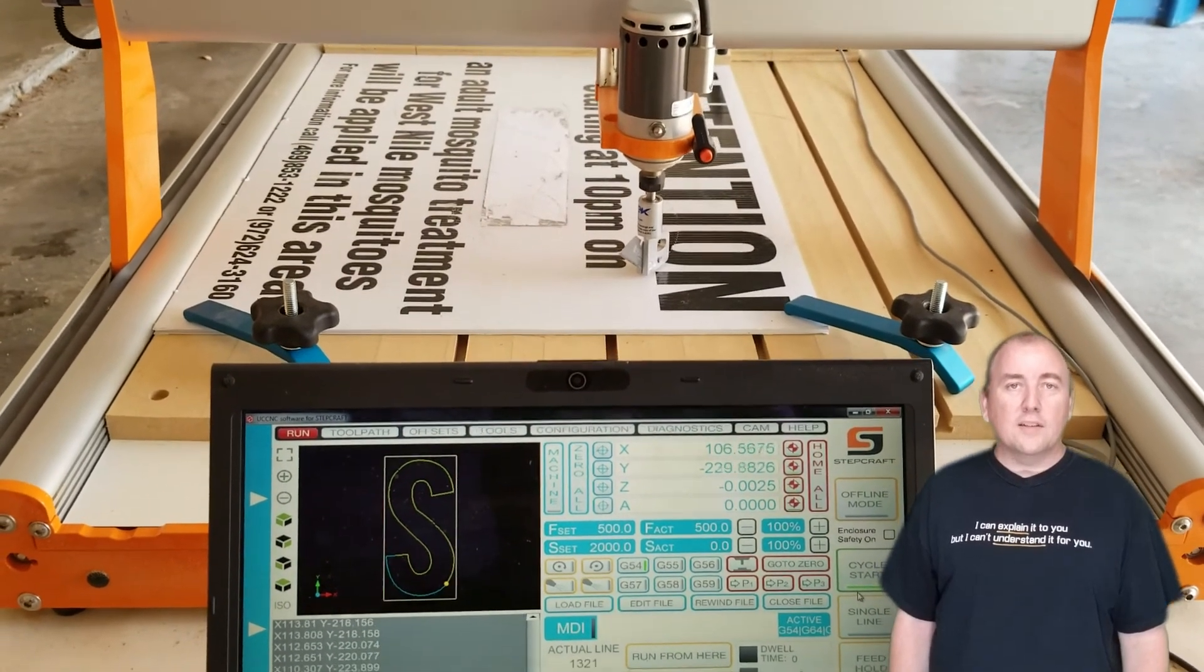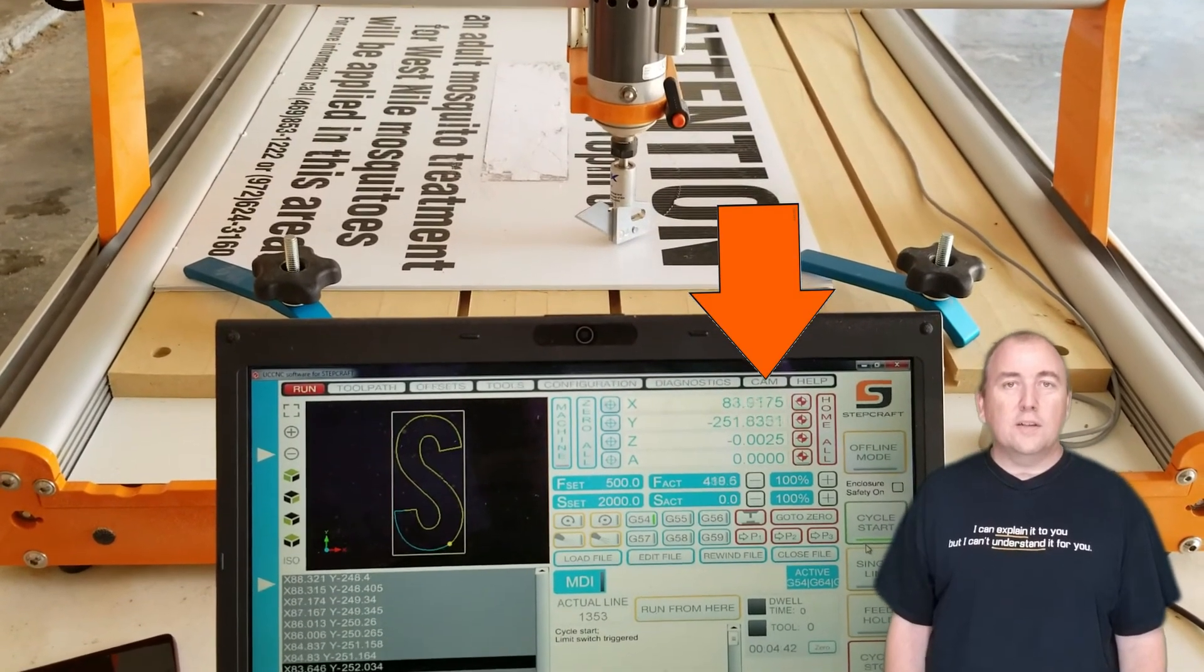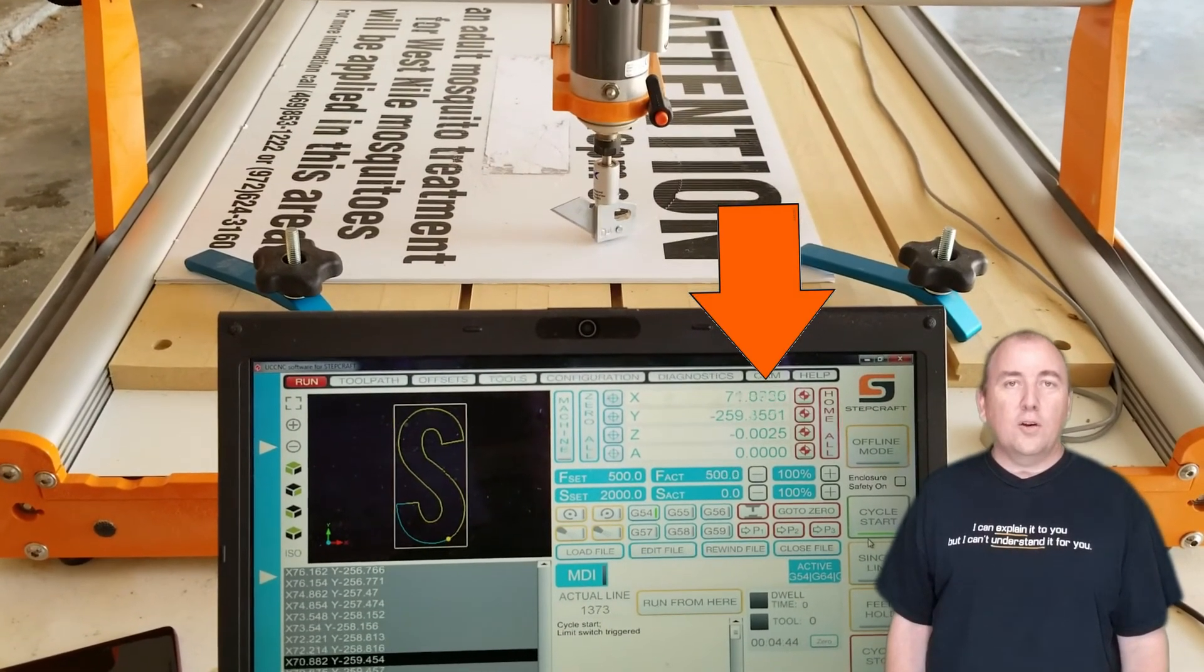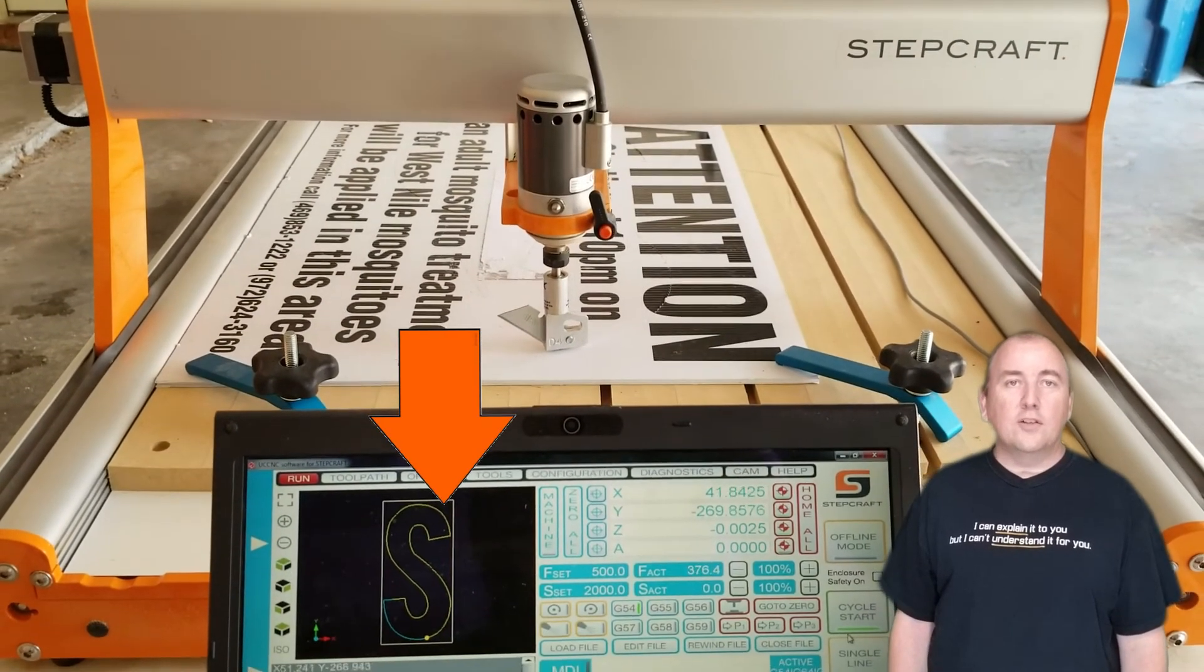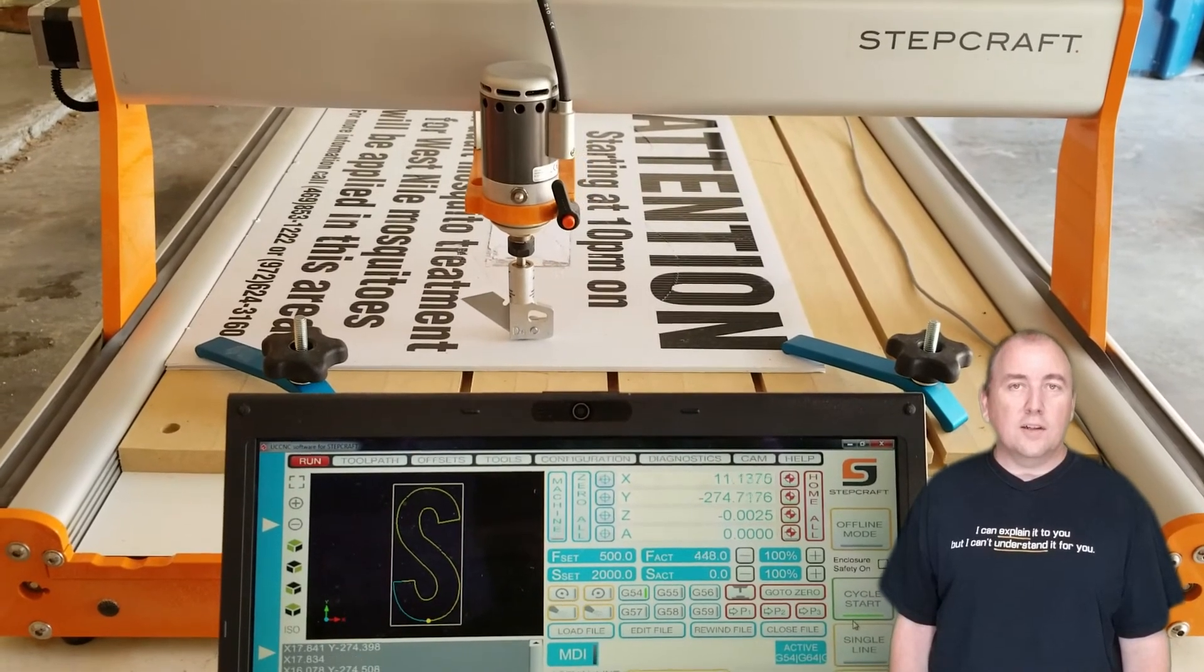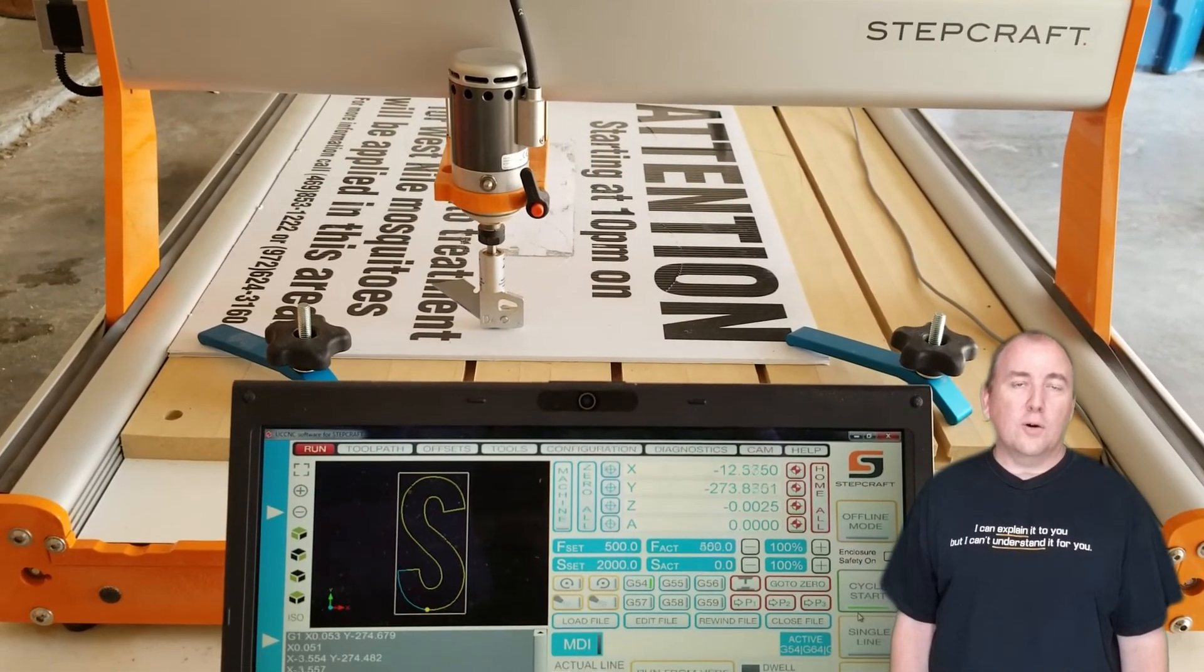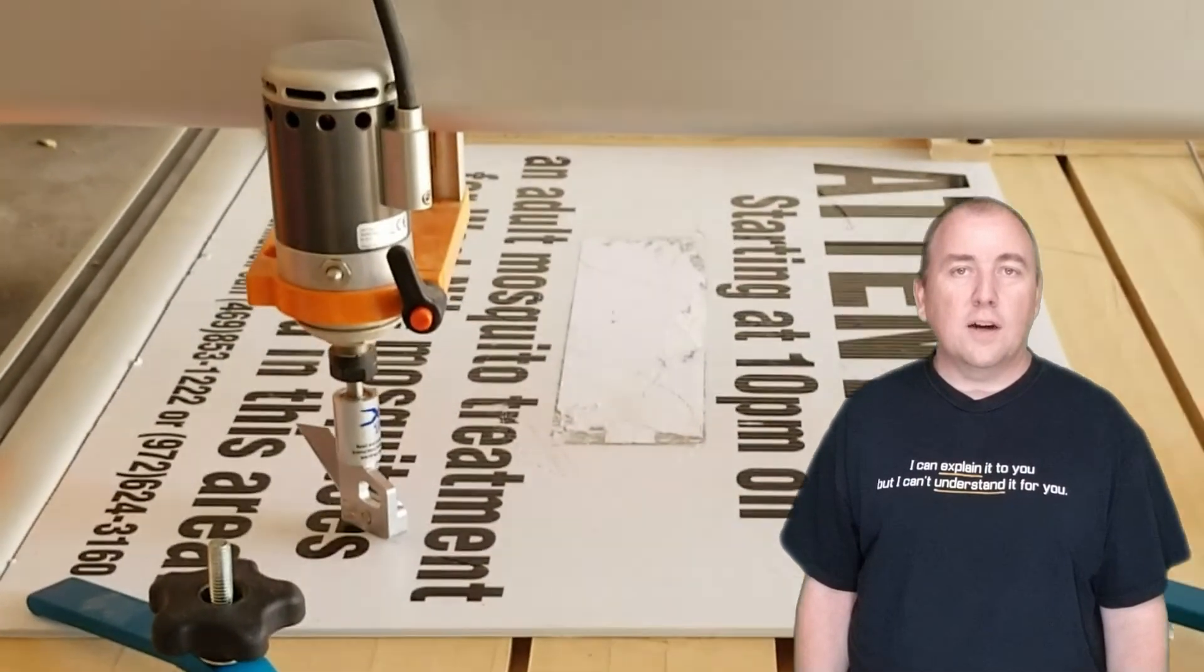We started by cutting an S as it seemed to be the most complex. On the screen of the laptop driving the CNC you can see the current x and y coordinate of the drag knife as well as a plot of the current cutting progress. I used a very slow feed rate to cut the letters thus it took about three minutes to cut each. I feel the feed rate could have been increased but I was in no hurry.